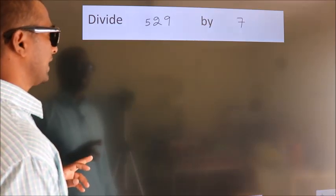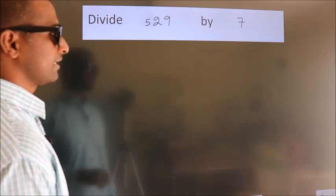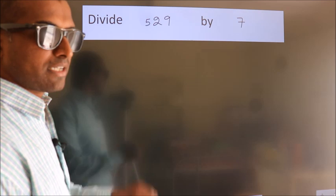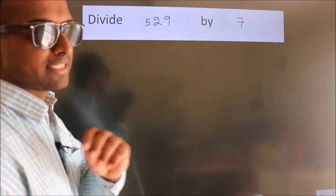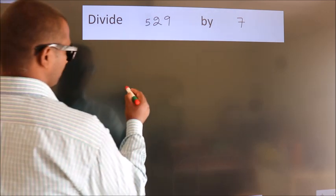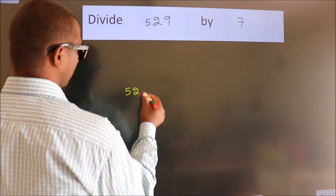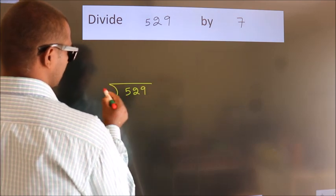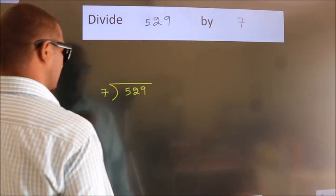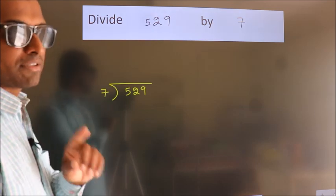Divide 529 by 7. To do this division, we should frame it in this way. 529 here, 7 here. This is your step 1.